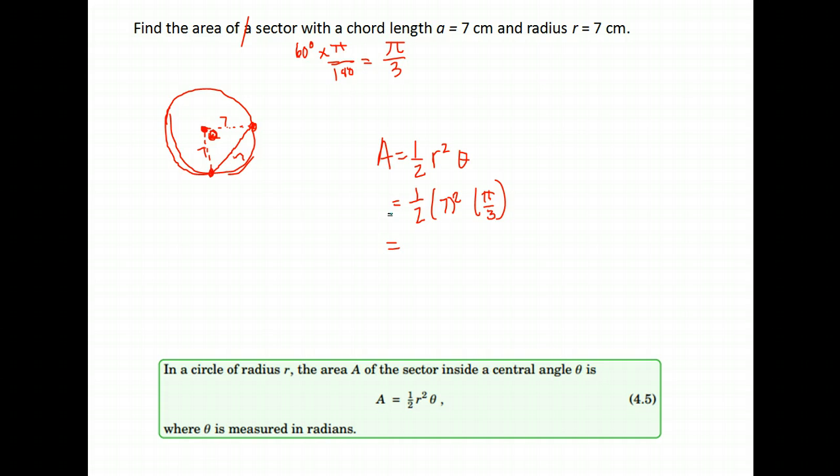We do 0.5 times 7 squared, which is 49, times pi divided by 3. You should get about 25.66, and that is in centimeters also, so square centimeters.